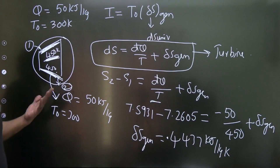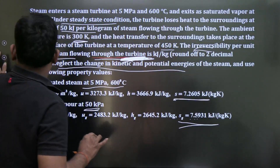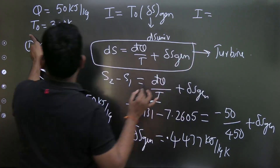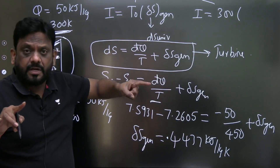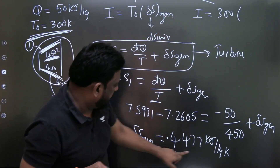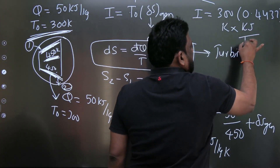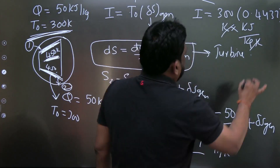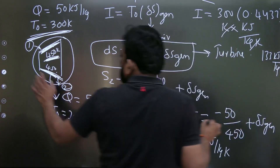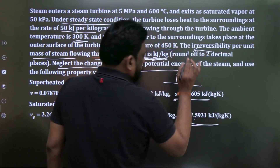Entropy generation = (s2 − s1) − Q/T = (7.5931 − 7.2605) − (−50/450) = 0.4437 kJ/kg·K. Irreversibility = T₀ × S_gen = 300 × 0.4437 = 133 kJ/kg. This is the irreversibility through the turbine.